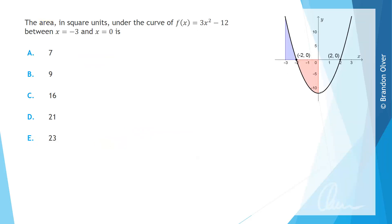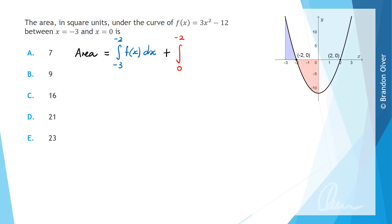On this slide there's a computer-generated sketch showing two regions: one in blue above the x-axis and one in red below. The total area equals the integral from -3 to -2 of f(x) dx for the blue region, plus the second area. To make the second integral positive, we swap the terminals — going from 0 to -2 instead of -2 to 0 — and include f(x) dx.